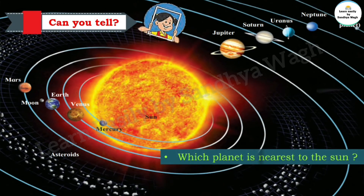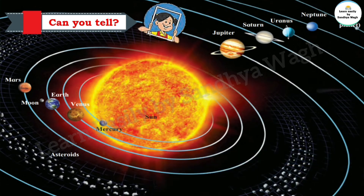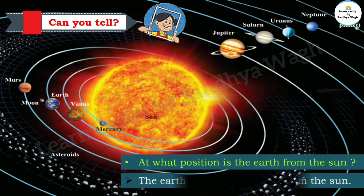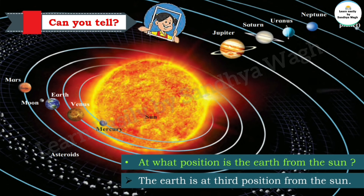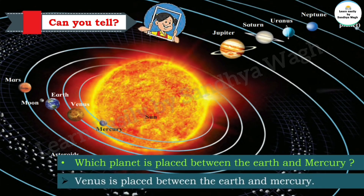Now can you tell which planet is nearest to the sun? Yes, very good — Mercury. Mercury is the nearest planet to the sun. Next question: at what position is the Earth from the sun? The Earth is at the third position from the sun. Next question: which planet is placed between the Earth and Mercury? Yes, very good — Venus. Venus is placed between the Earth and Mercury.